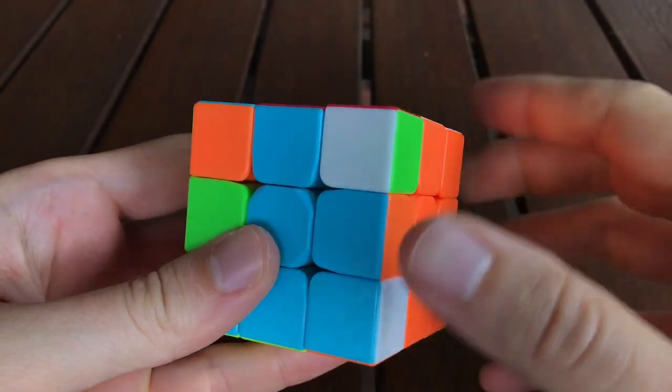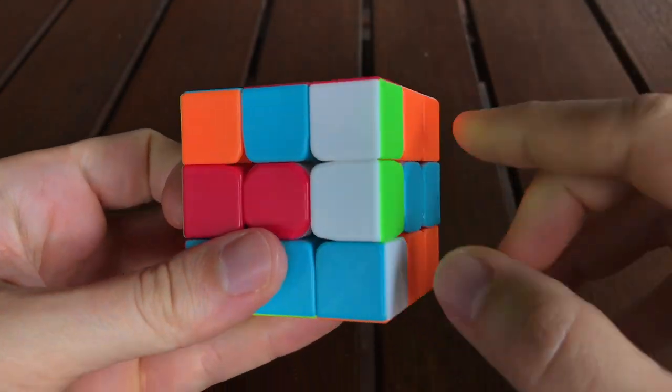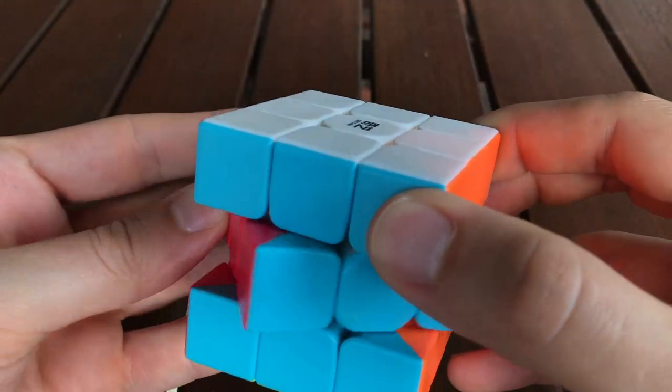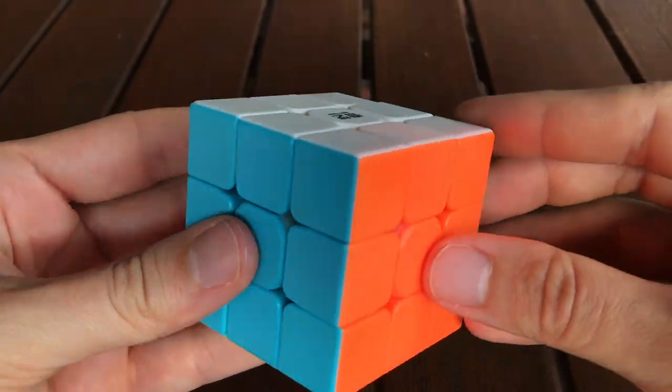As before, to undo this algorithm, I'll first do the sub-algorithm, then the equator, undo the sub-algorithm, and undo the equator, and this solves the cube back.